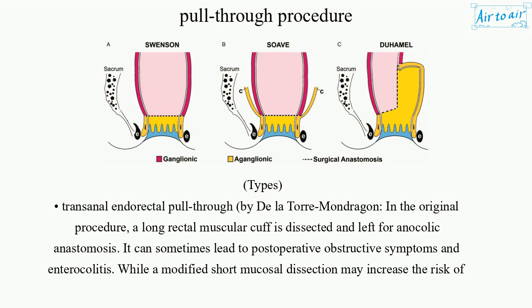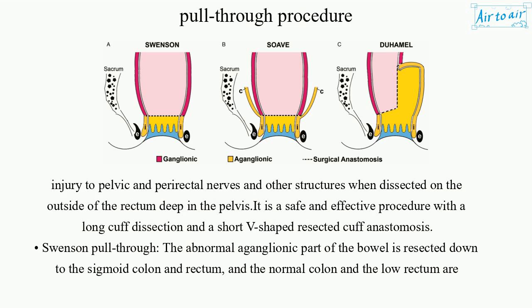Types. Transanal endorectal pull-through by De La Torre Mondragon: In the original procedure, a long rectal muscular cuff is dissected and left for anacolic anastomosis. It can sometimes lead to postoperative obstructive symptoms and enterocolitis. A modified short mucosal dissection may increase the risk of injury to pelvic and pararectal nerves when dissected outside the rectum deep in the pelvis. It is a safe and effective procedure with a long cuff dissection and a short V-shaped resected cuff anastomosis.